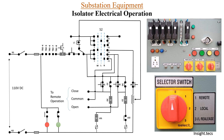Local electrical operation is done using two push buttons — PB1 (close) and PB2 (open). If you want to close the isolator electrically, press PB1 (close push button). The DC moves to the CC contact. Also provided is an NC contact from the OC contactor to confirm the isolator is open before closing. Conversely, if you want to open the isolator, the NC contact of the CC contactor is used.